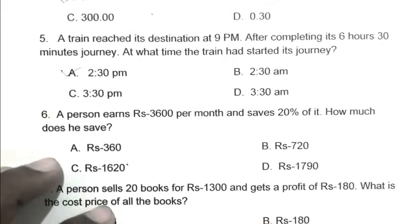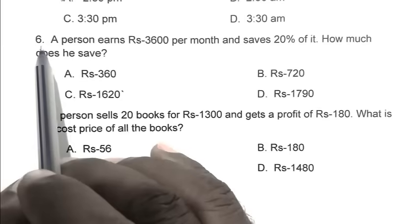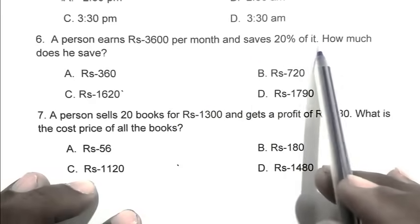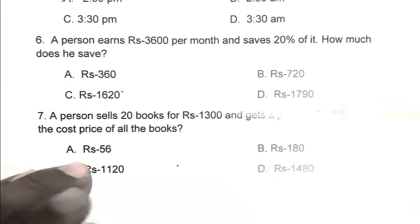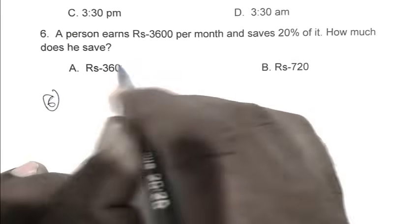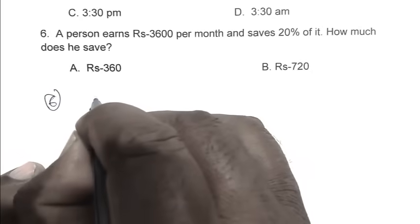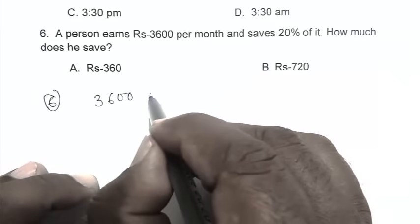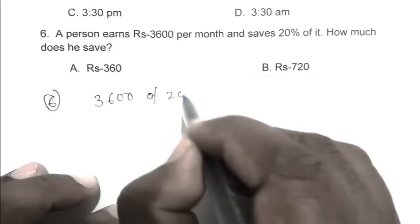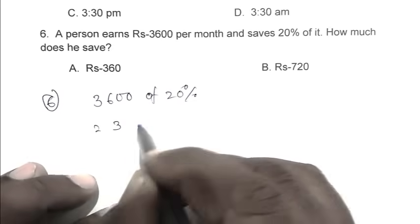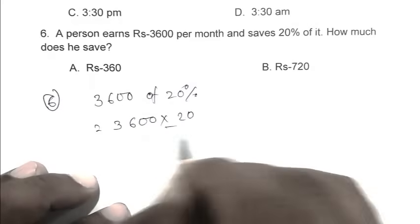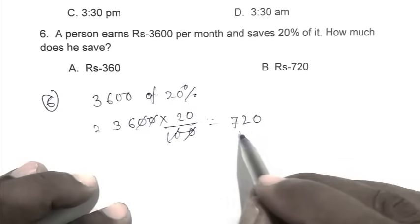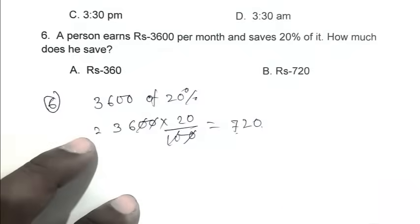Question number six: a person earns rupees 3600 per month and saves 20% of it. How much does he save? So 3600 multiplied by 20 by 100 equals 720 rupees. So B is the right answer.